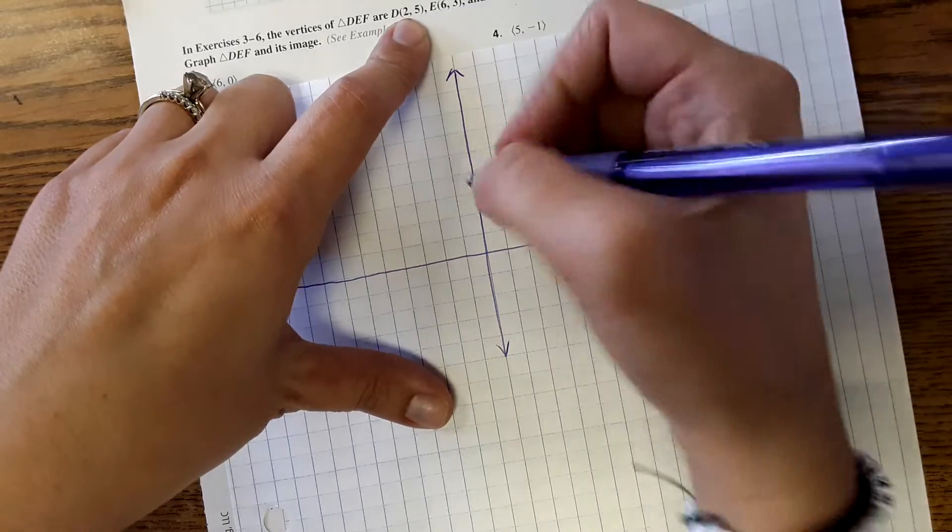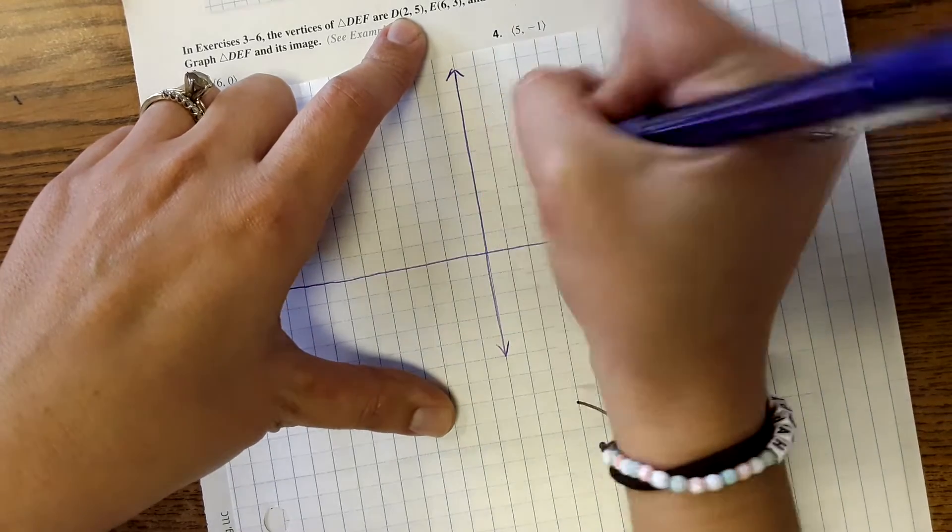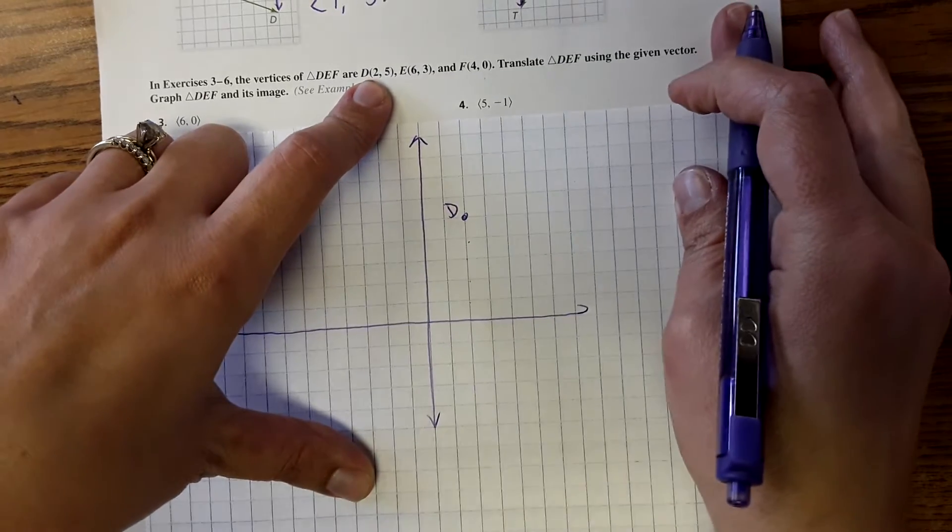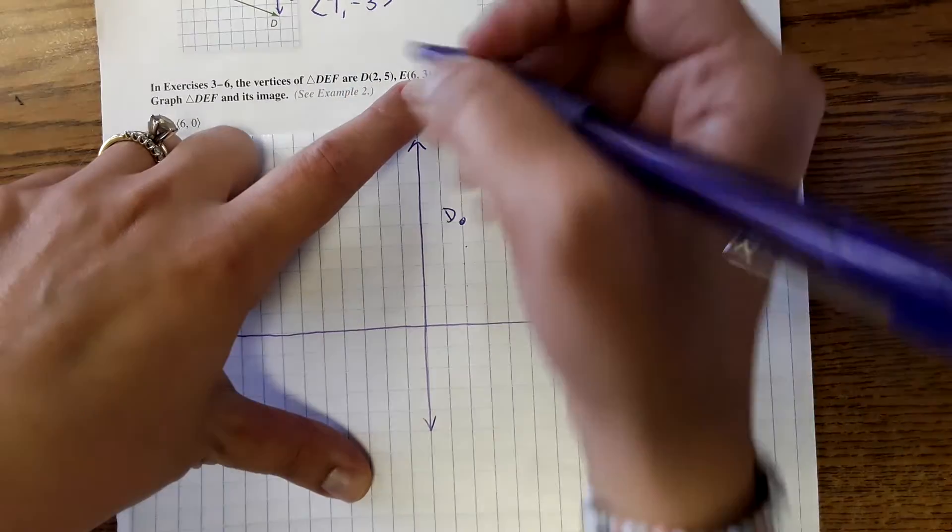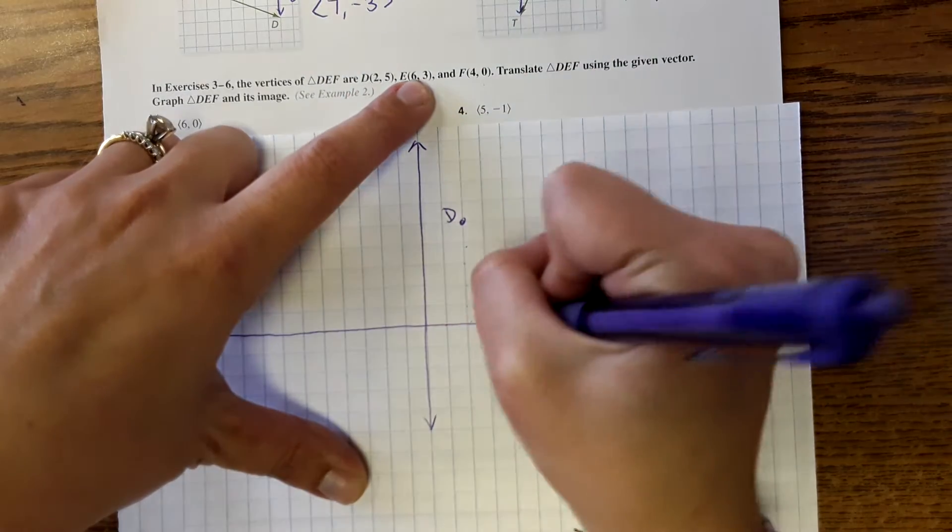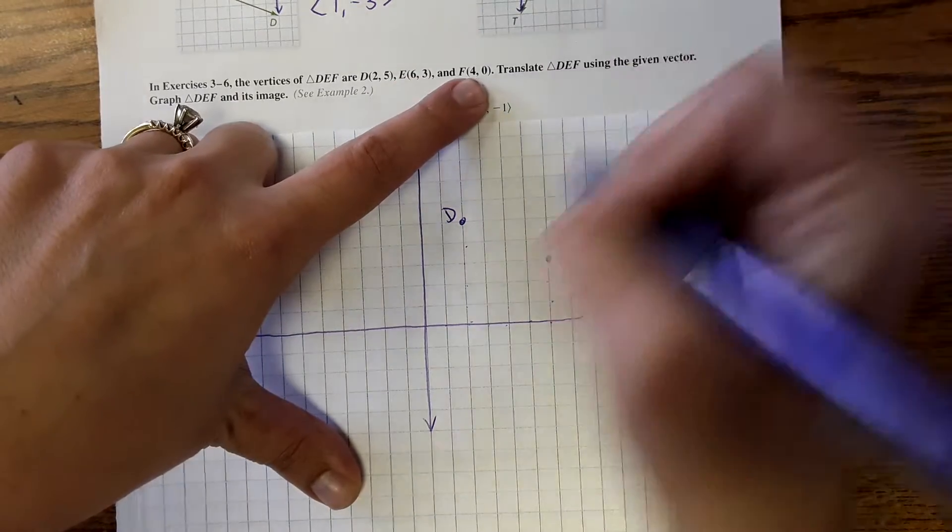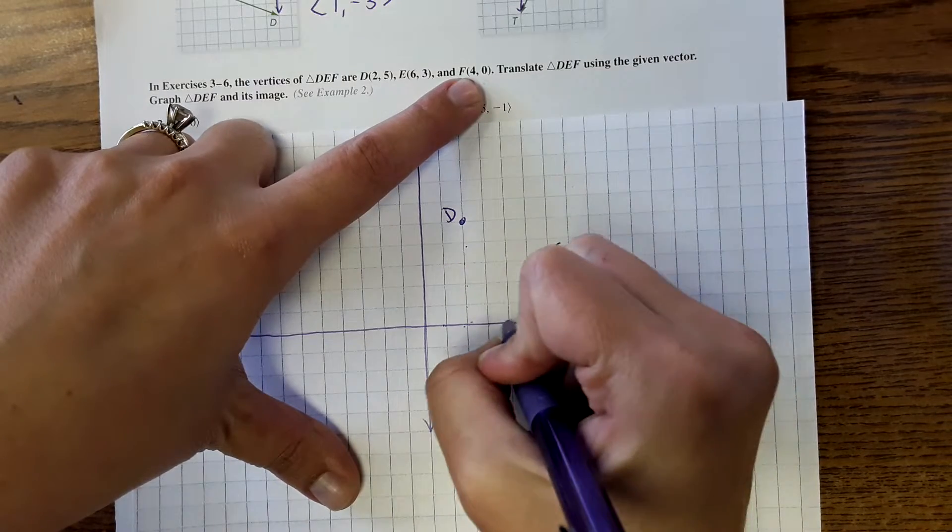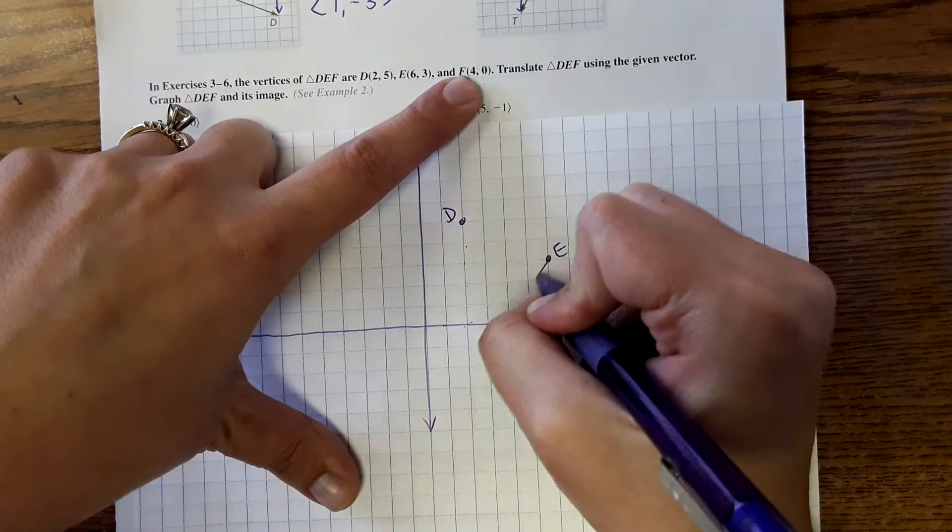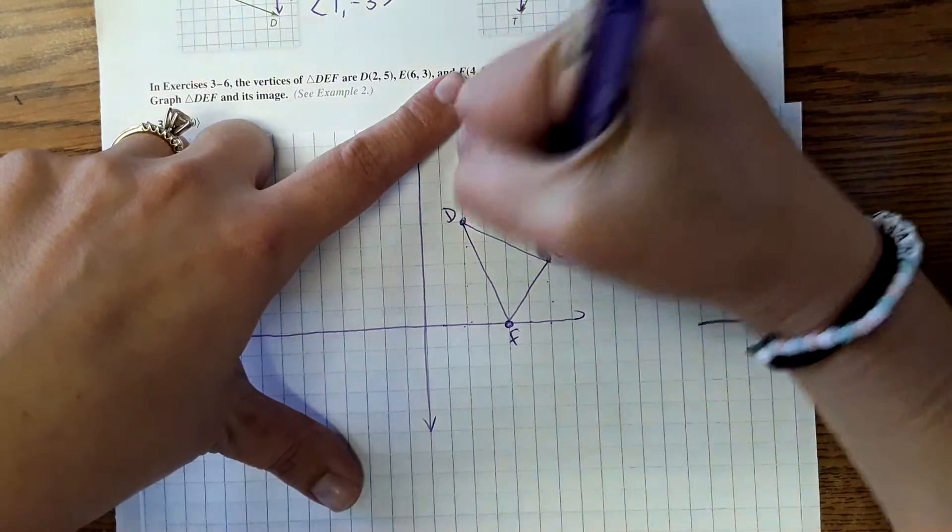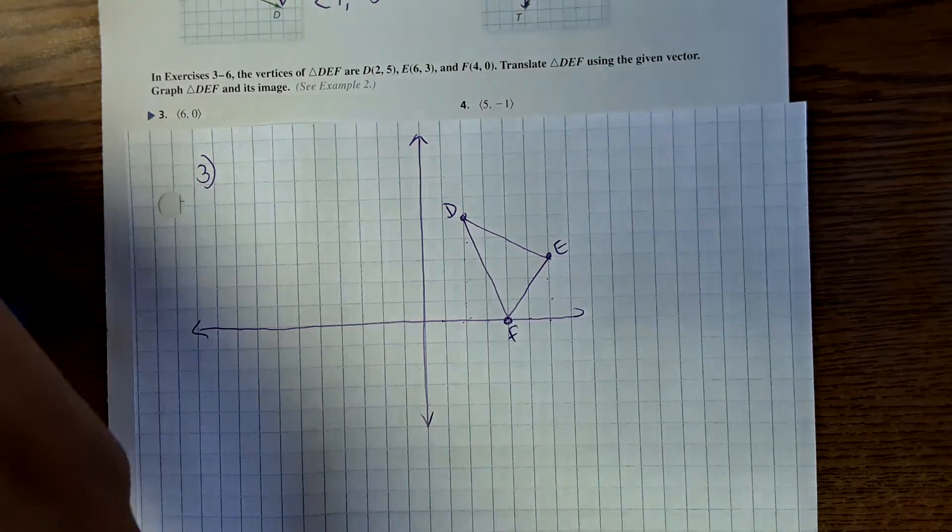So for number 3, I'm just going to be making a pretty large graph, and I'm going to use this graph for the next 3 or 4 questions. So graphing this original shape, DEF, at 2, 1 through 5. E is at 6, 3. And then F is at 1 through 4. Okay, so that's our original, that's our pre-image.